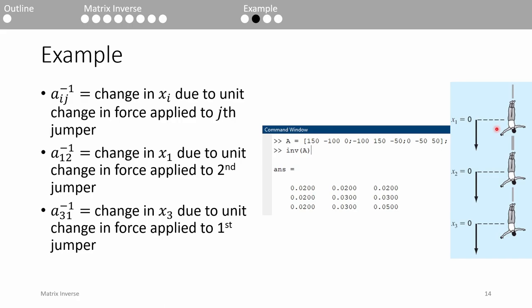In contrast, the numbers in the second column indicate that applying an additional 1 newton force to the second jumper would move the first jumper down by 0.02 meters, but the second and third jumpers by 0.03 meters. The 0.02 meter elongation of the first jumper makes sense because the first cord is subject to an extra 1 newton regardless of whether the force is applied to the first or the second jumper.